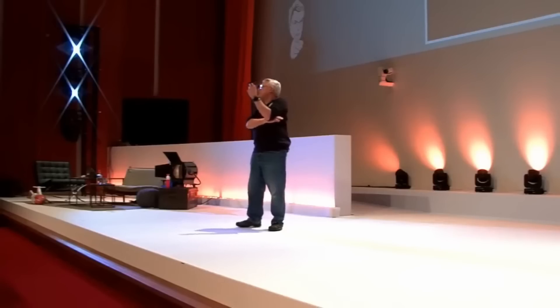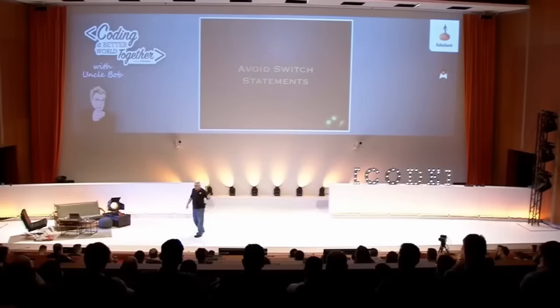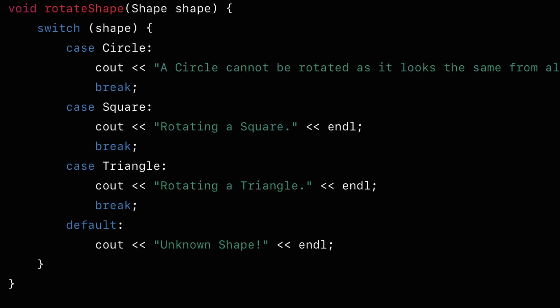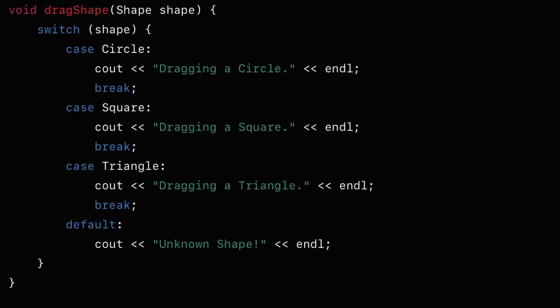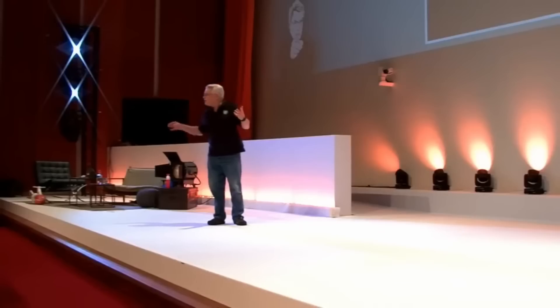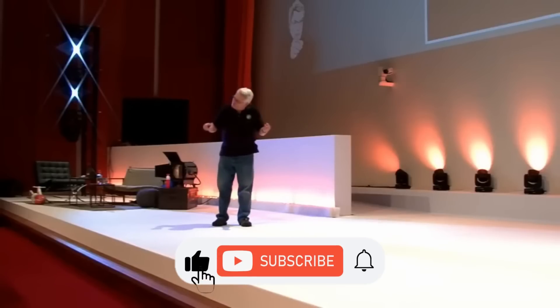Because your system deals with shapes — how many such switch statements will there be? You're going to have to have a switch statement when you draw a shape. You'll have to have another one when you rotate a shape, and another one when you erase a shape, and another one when you drag a shape, another one when you stretch a shape. In fact, every time you do anything to a shape, you'll have to have a switch statement.